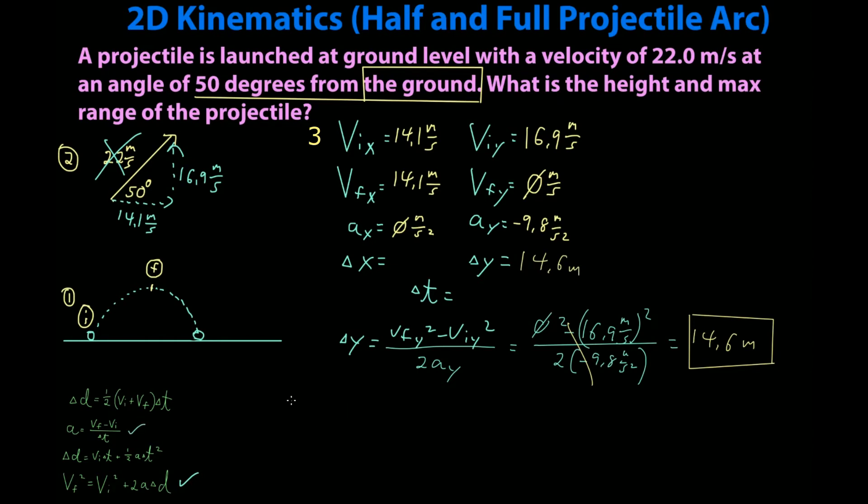Time I will use the acceleration equation because it's really easy to rearrange for time. Time equals VF minus VI over acceleration. Zero minus 16.9 meters per second over negative 9.8 meters per second squared. Negatives cancel. One of these seconds cancel. This second is in the denominator so it's going to be flipped and I will get an answer of 1.72 seconds.